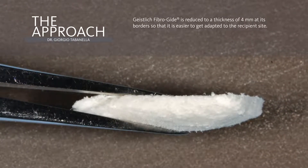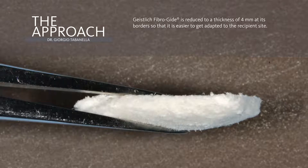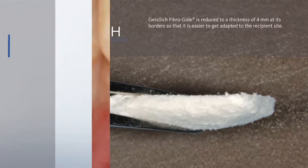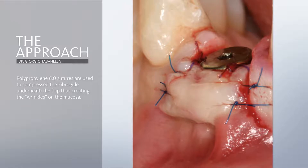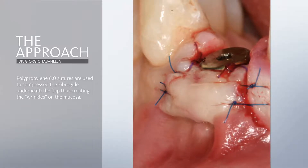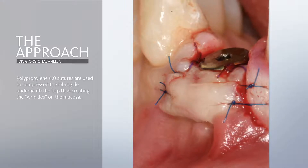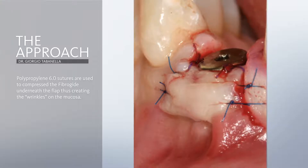Generally, I don't reduce the thickness of the fibrogate except for just the border. This is how the tissue looks immediately after the pedicle is translated towards the buccal aspect, which is quite useful also to reposition the mucogingival junction and to increase the depth of the vestibule without performing any kind of advanced procedures.